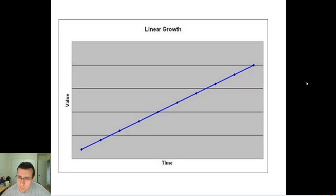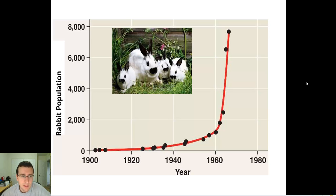But in nature, what usually happens if there's plenty of resources is exponential growth. Imagine you start with two rabbits. Rabbits can have a litter of eight within three months. Three months later, they can have eight more, and three months later, eight more, and three months later, eight more.